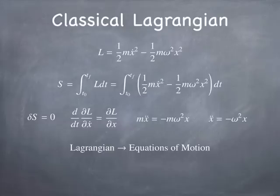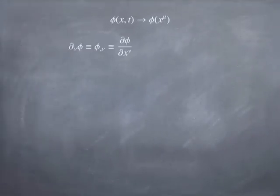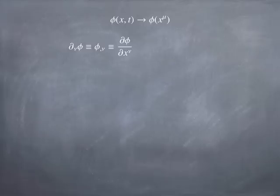From the Lagrangian, you can extract equations of motion. Now, how do we generalize this to a field? A field exists at any point in time and space — it's a function of time and space. I'm describing here a scalar field, like a temperature or a mass density, which is just a number depending on time and space. You can also have vector fields, like the vector potential, the electric field, or the magnetic field.